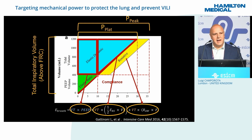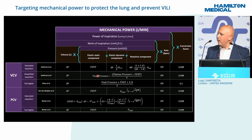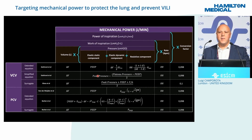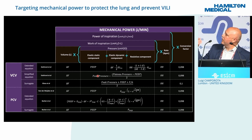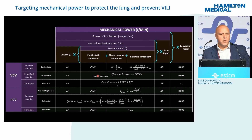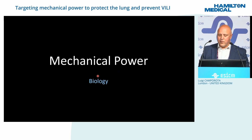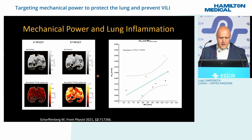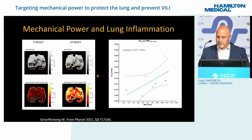There are many ways to calculate mechanical power, from the classical formula at the top to very simplified ones at the bottom — they are all mathematically equivalent. From a biological perspective, we care about mechanical power because the more mechanical power we deliver, the greater the inflammation in the lung, and that makes sense.